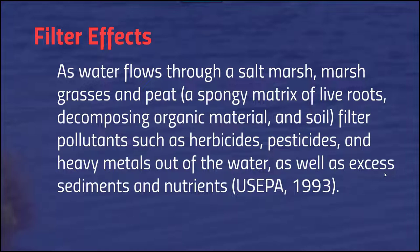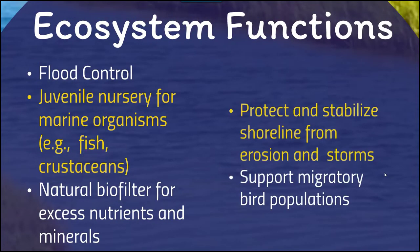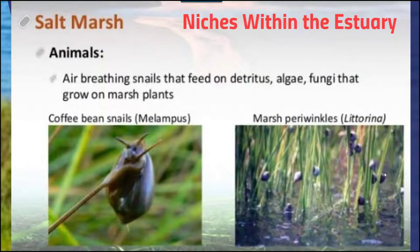Another function of these ecosystems is protection and stabilization of the shoreline from erosion and storms. They also support migratory bird populations and a wide diversity of birds. There are different niches within the estuary — some organisms are air-breathing and need to feed on detritus, algae, and fungi that grow on salt marsh plants, such as the coffee bean snail and the marsh periwinkle.